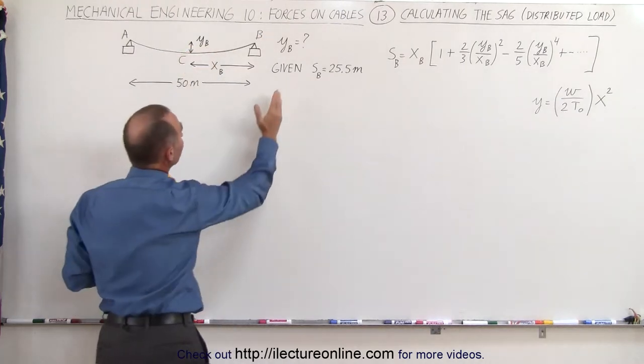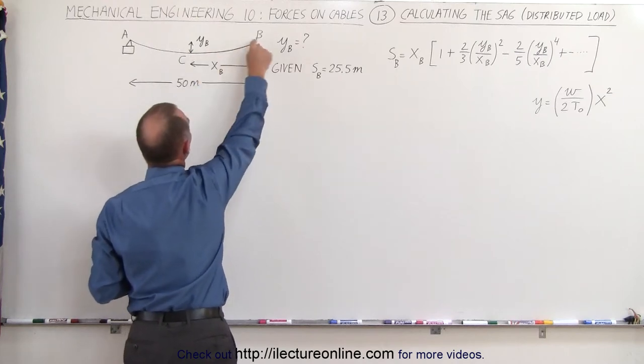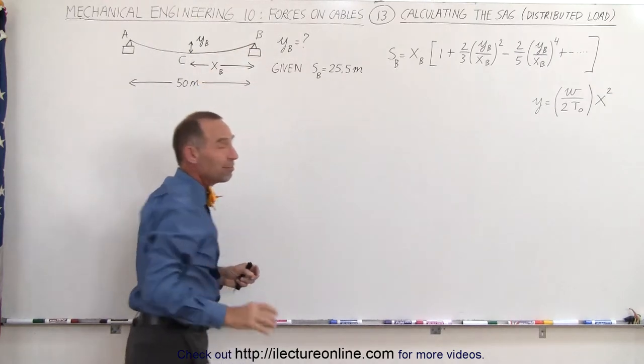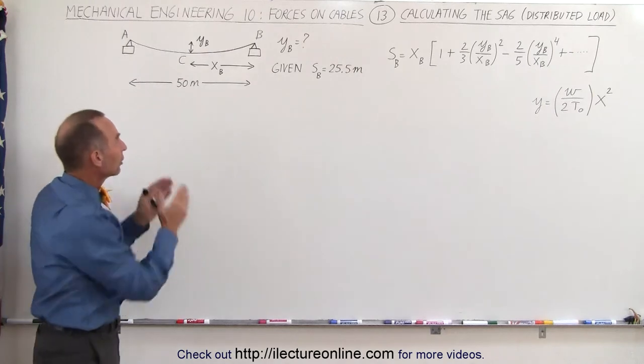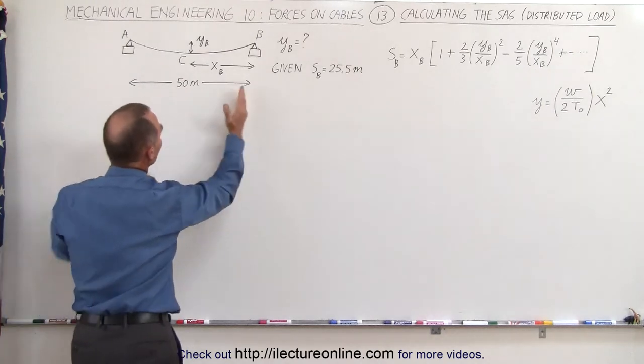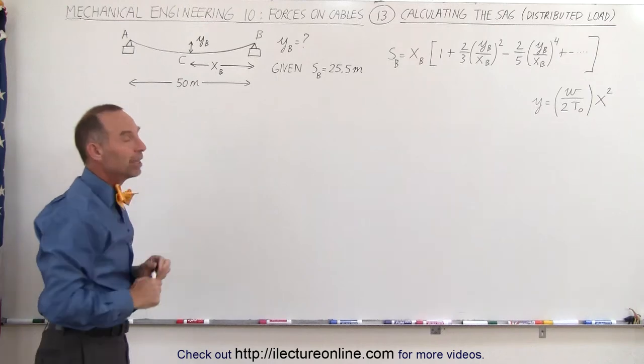And let's say we're given the cable length from point C to point B to be 25.5 meters, so a half a meter longer than the horizontal distance from there to there. That would be half of 50 or 25 meters.